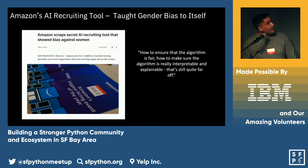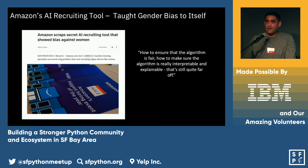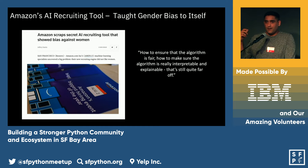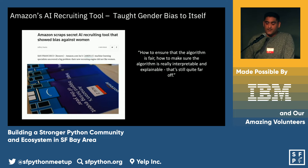Amazon had to scrap their automated AI recruiting tool. This tool was trained on the last 10 years of resume data. In this industry there are more male software engineers applying for positions, so the algorithm learned terms from resumes that were male-specific. It automatically started filtering out resumes that had things like 'captain of the women's soccer club,' treating that as a signal the person might not be a good candidate. That's a more recent example of how bias affects all of us.